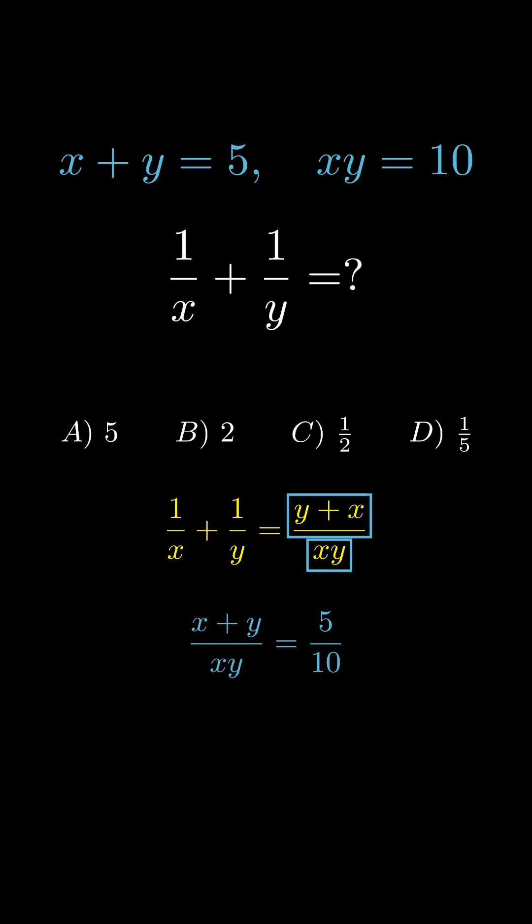Boom. The answer is C, 1 half. Didn't even need to solve for x and y variables. Remember, sometimes the shortcut is the smarter route. Want more SAT hacks like this? Follow SatMathPlanet.